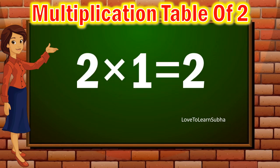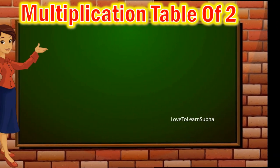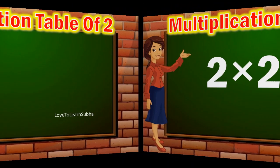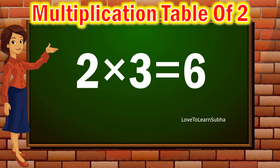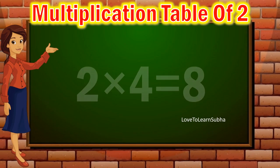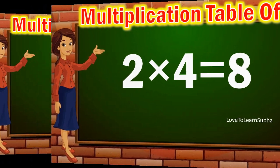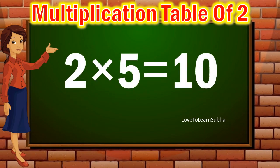2 1s are 2, 2 2s are 4, 2 3s are 6, 2 4s are 8.